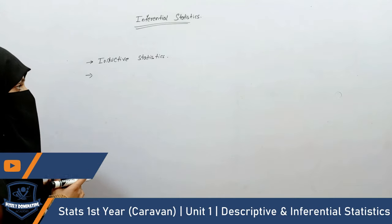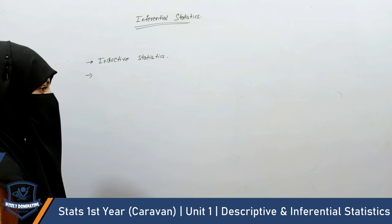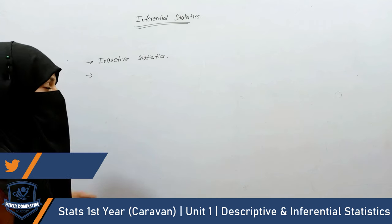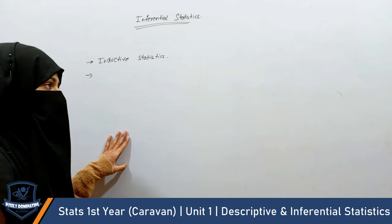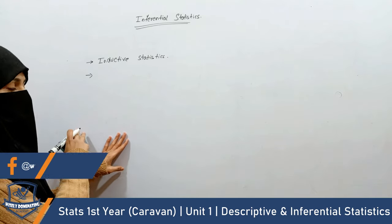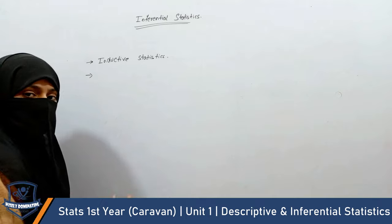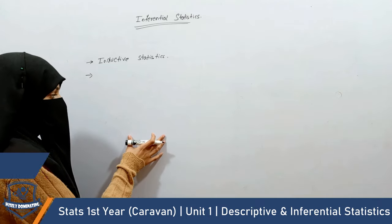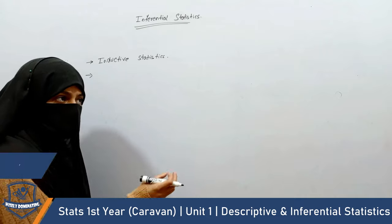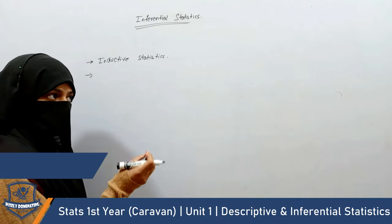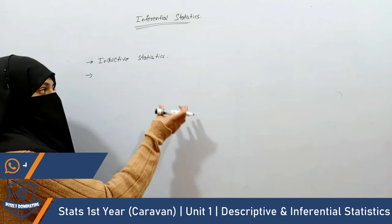Now let's take an example. We want to find the average height of all students in a school. It is very difficult to measure all students' heights. So what do we do? We take a sample of some children with different heights, calculate the average height for that sample, and then predict the average height for the whole population. In this example, the population was all students. We take a sample and calculate the average, then predict for the whole population.